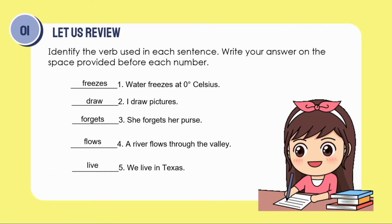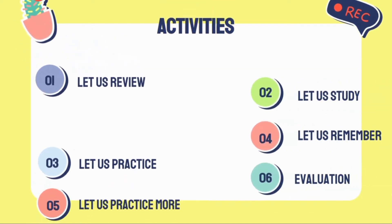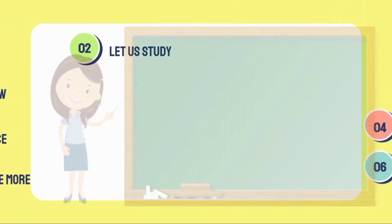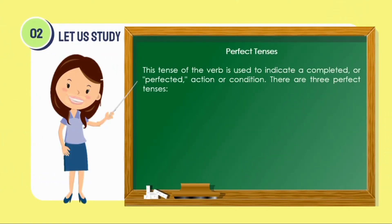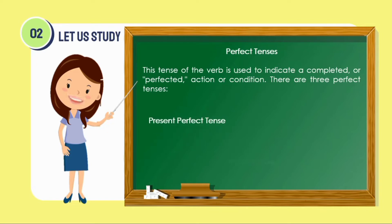Let us now proceed to our new lesson. We have the perfect tenses. This tense of the verb is used to indicate a completed or perfected action or condition. There are three perfect tenses: the present perfect tense, the past perfect tense, and the future perfect tense.